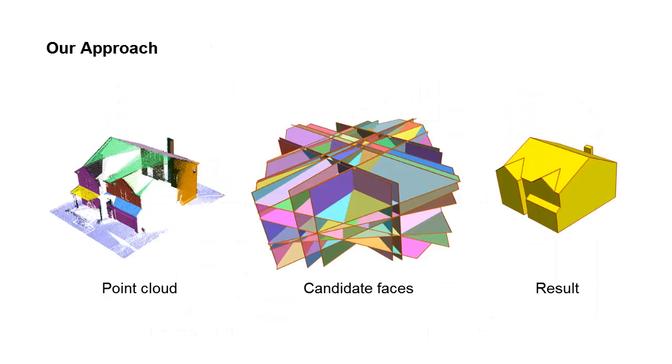Our method focuses on intersecting the primitives and selecting an appropriate combination of them. Our goal is to obtain a lightweight, manifold and watertight polygonal surface model.